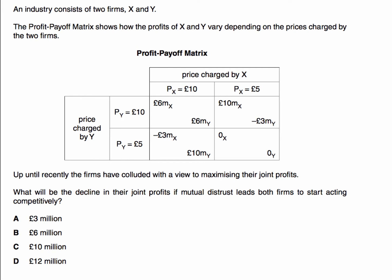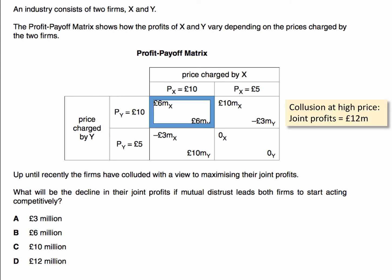We're told initially the firms have been colluding, which suggests they've been trying to charge a high price each. We've got two prices — £10 and £5 — so if they collude at their high price they'll be in the top left of the profit payoff matrix, and the joint profits will be £12 million: £6 million each.